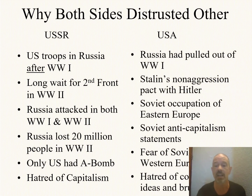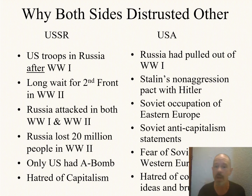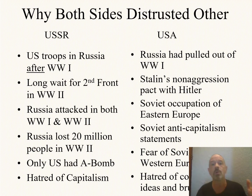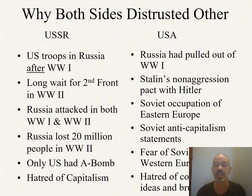The United States didn't have a collectively better feeling toward the Soviet Union either. After all, Russia had pulled out of World War I — they just abandoned us. How do you trust people like that? And then 22 years later, Joseph Stalin signs that non-aggression treaty with Adolf Hitler, allows Hitler to invade Poland, and of course the Soviet Union invades the other half — the eastern half — of Poland. How do you trust somebody like this?